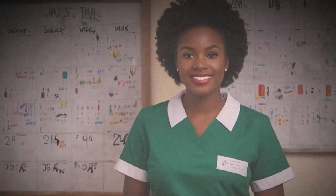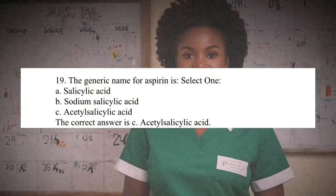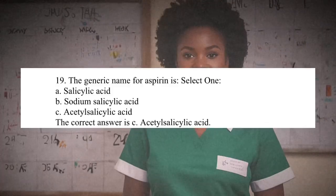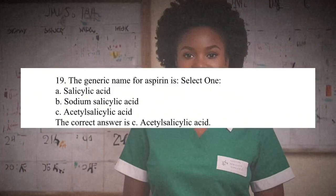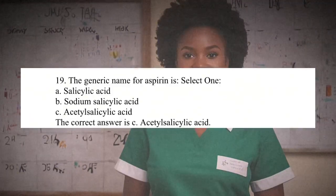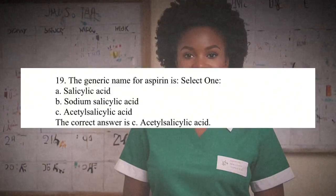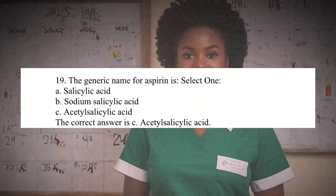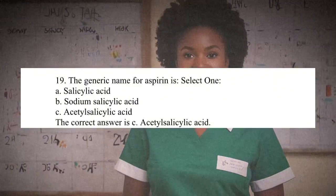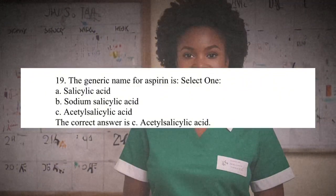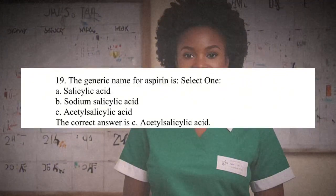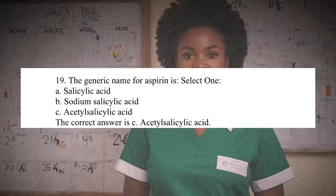Question 19: The generic name for aspirin is: A. Salicylic acid. B. Sodium salicylic acid. C. Acetylsalicylic acid. The correct answer is C. Acetylsalicylic acid. Aspirin is commonly known by its generic name acetylsalicylic acid, which is a compound derived from salicylic acid.